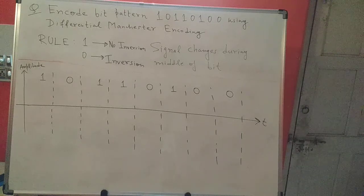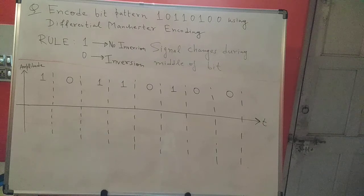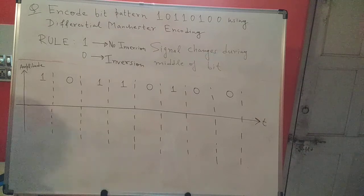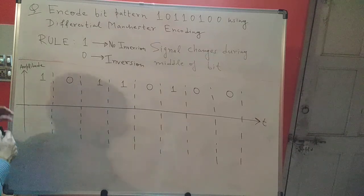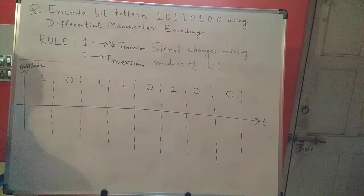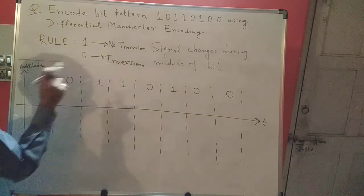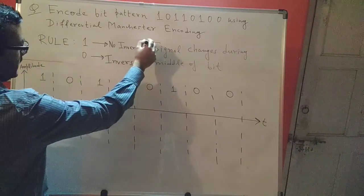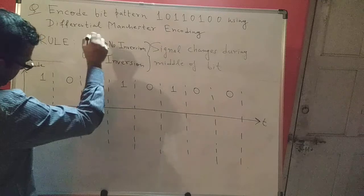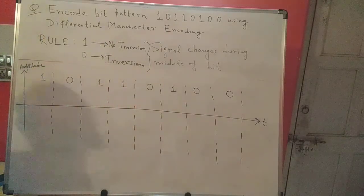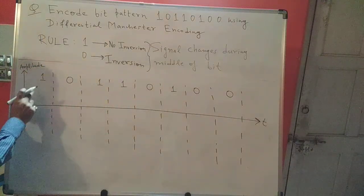In this video we will see how to encode the given bit pattern using differential Manchester encoding. In the last video we saw Manchester encoding; here we'll see differential Manchester encoding. The rule to keep in mind is: one represents no inversion and zero represents inversion. Also, the signal will change during the middle of the bit for both one and zero.